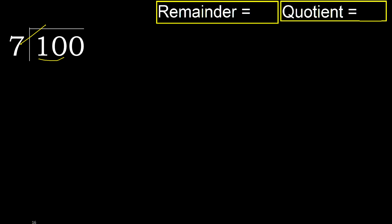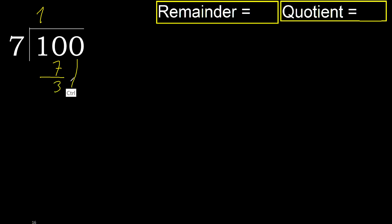but not greater. 7 multiplied by 2 is 14 — 14 is greater. Multiplied by 1: 7 is not greater. 10 minus 7 is 3.